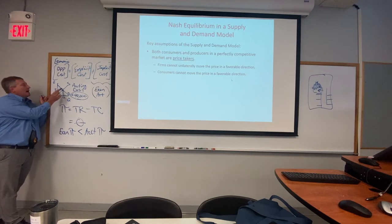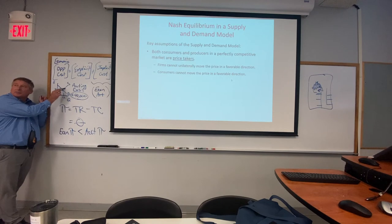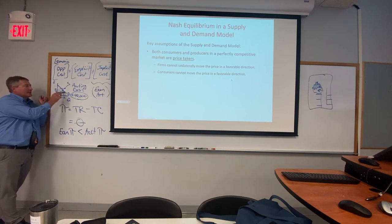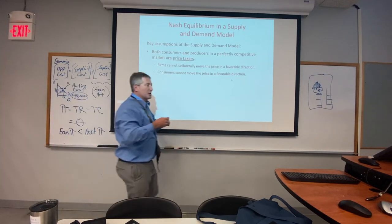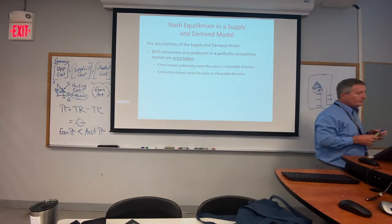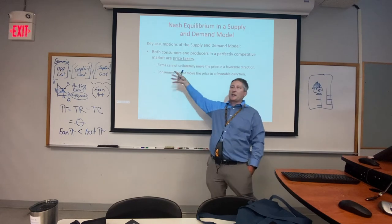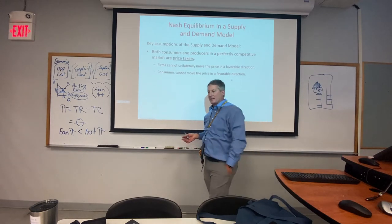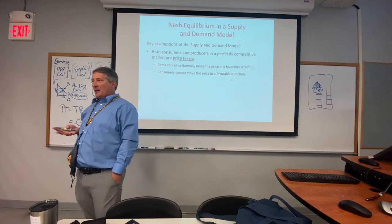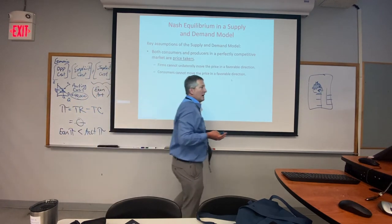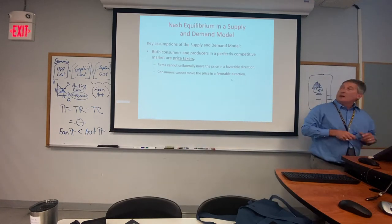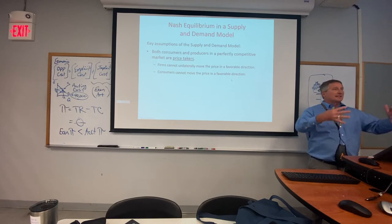At a price above equilibrium, sellers won't sell all their product and we get a surplus. Buyers like low prices but at a price below equilibrium not all buyers will get the good, creating a shortage. So we really have a Nash equilibrium on the supply and demand curve — a place where we'd expect the market to come to rest. In a competitive market, price is set externally and you react to it as a price taker.